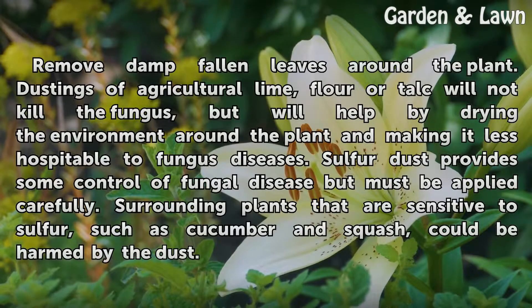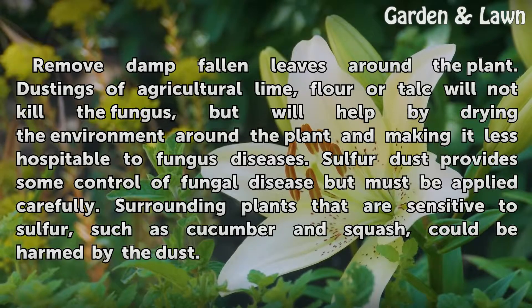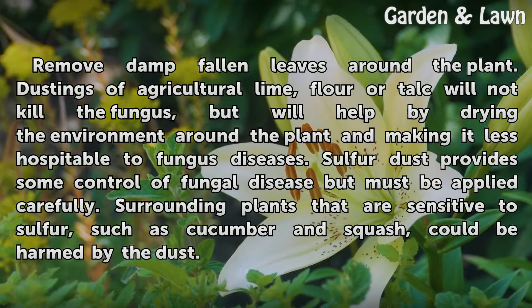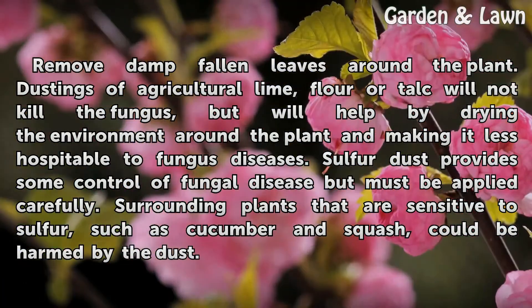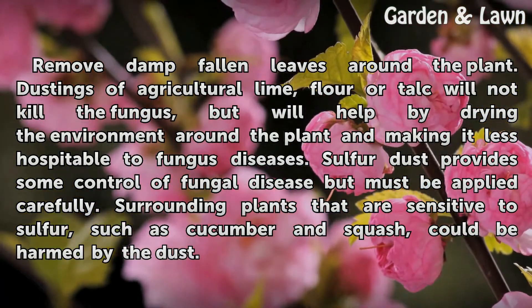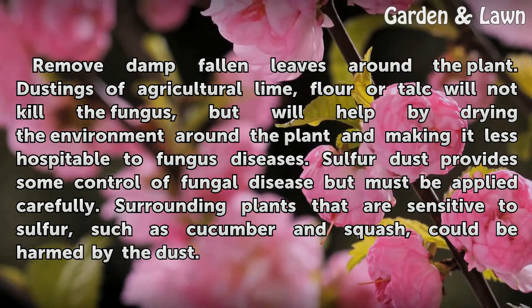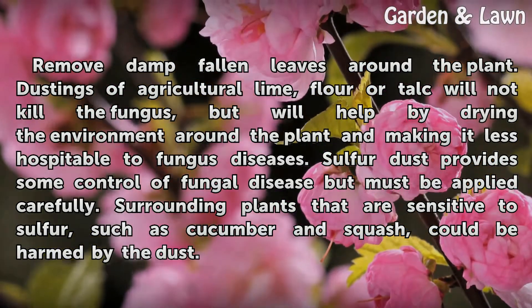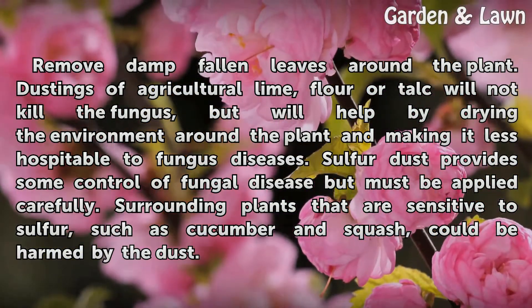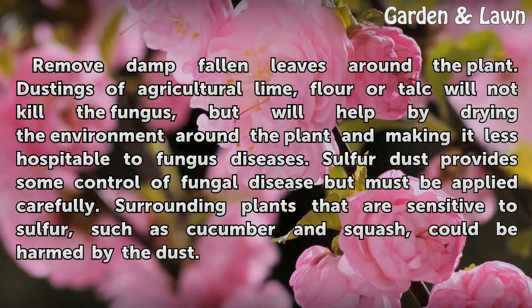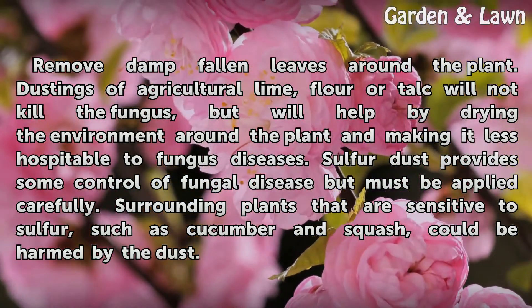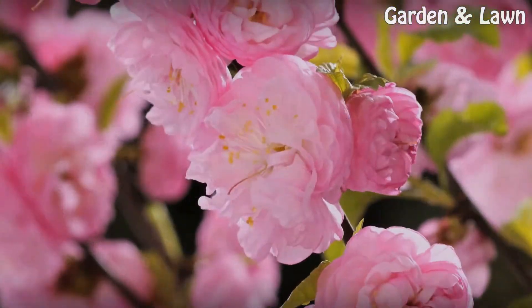Remove damp fallen leaves around the plant. Dustings of agricultural lime around the plant will not kill the fungus but will help by drying the environment and making it less hospitable to fungal diseases. Sulfur dust provides some control of fungal disease but must be applied carefully, as surrounding plants sensitive to sulfur — such as cucumber and squash — could be harmed by the dust.